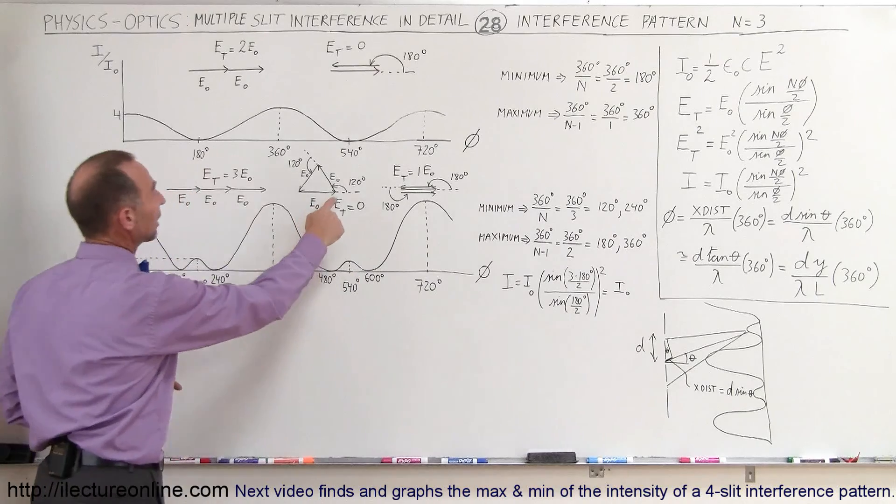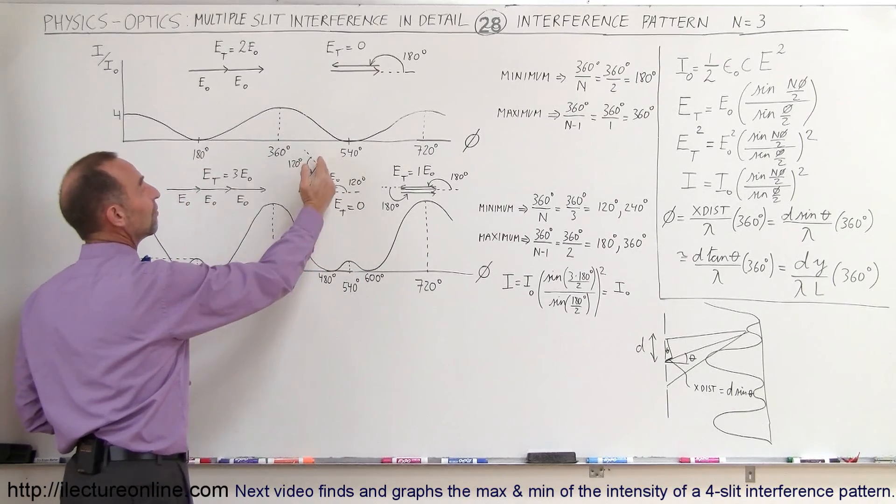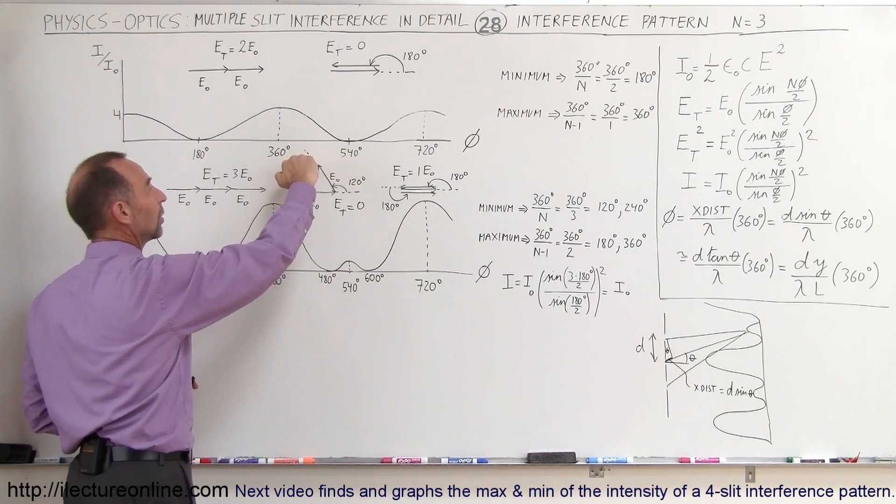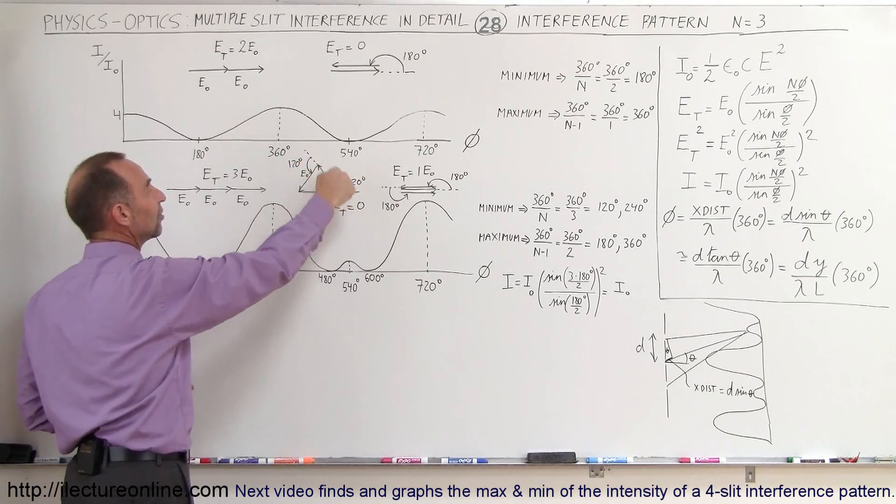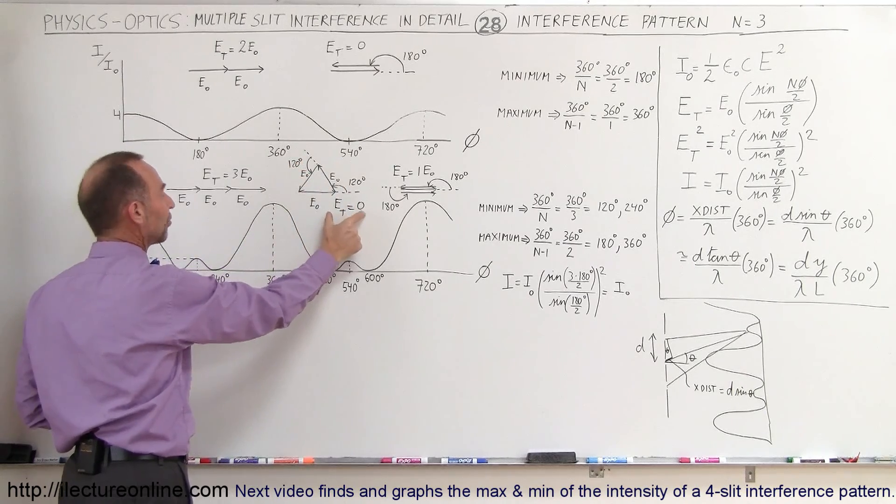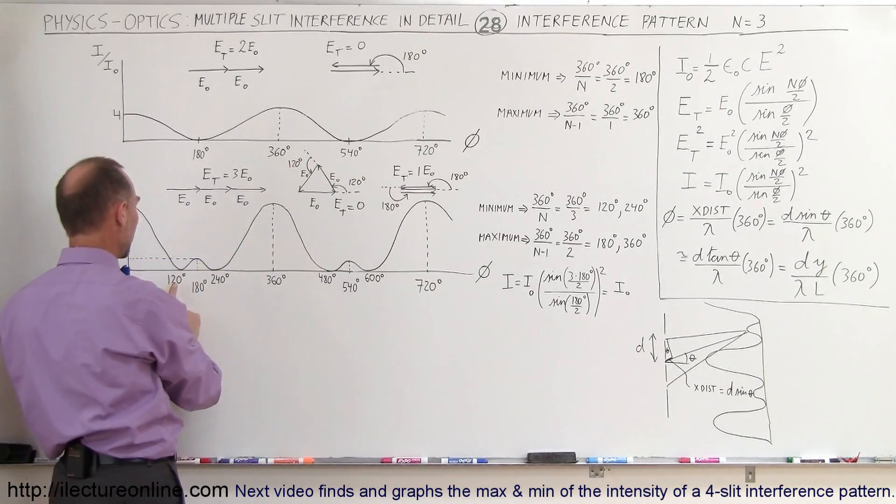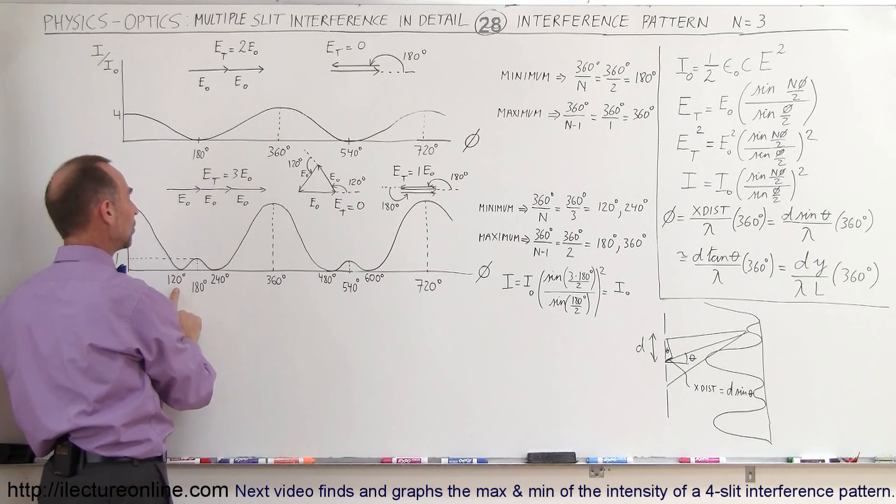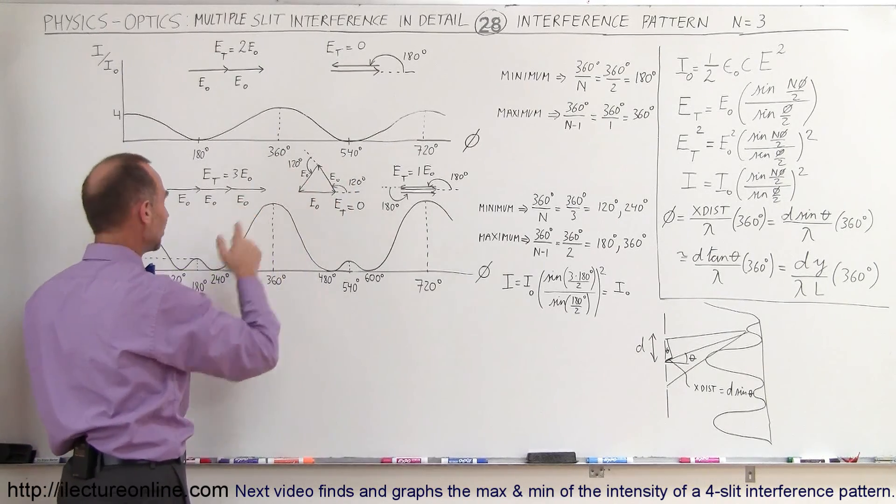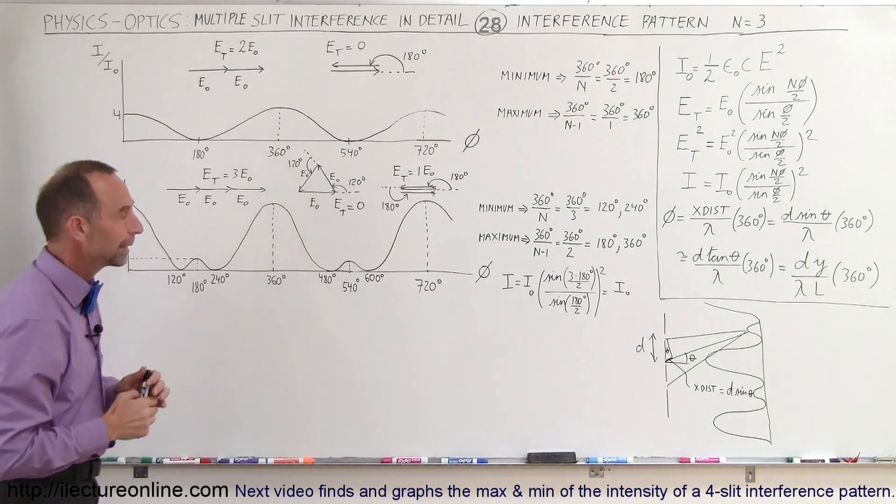And you can see that here when you take a look at it. If you have a 120 degree phase shift and another 120 degree phase shift, that the three phasers added together add up to a total of zero. And that's why you have a minimum right there where the intensity will be zero. And when you take 240 degrees, you have the same situation, and you'll get zero again.